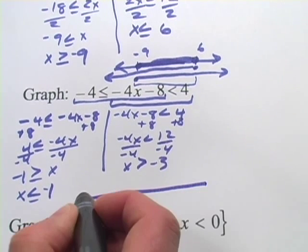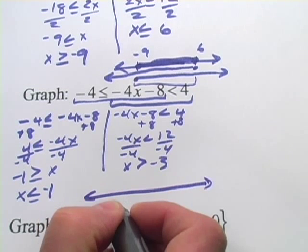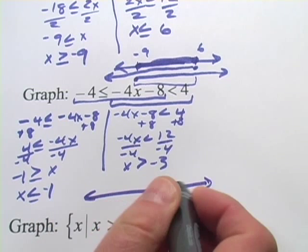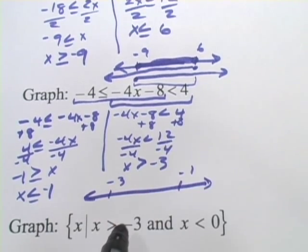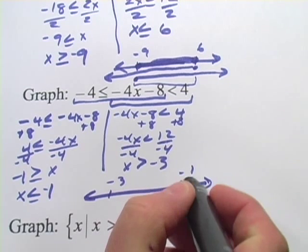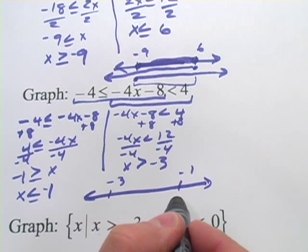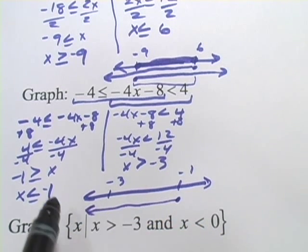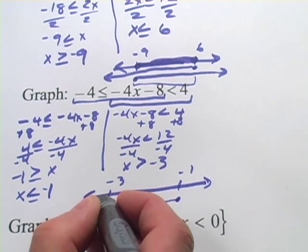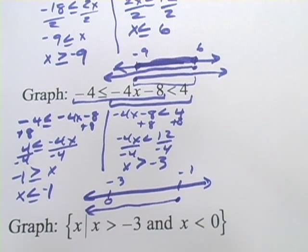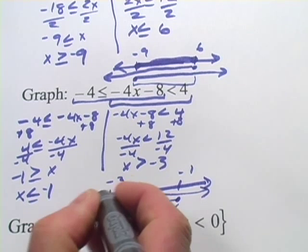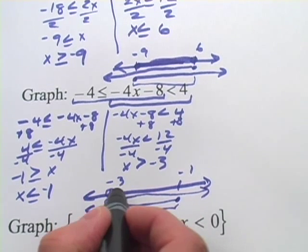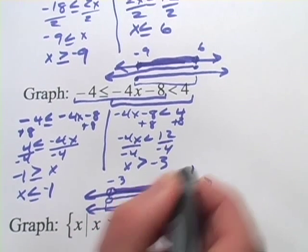Let's graph this. We put our points of interest on the number line: negative 3 and negative 1. X is less than or equal to negative 1 gives a filled-in dot at negative 1 stretching off in that direction. X is greater than negative 3, with no equal sign, gives an empty dot at negative 3 stretching in the greater-than direction. We want the overlap, so on the graph we have an open circle at negative 3, everything filled in up to negative 1, and a filled-in circle at negative 1.